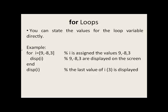We can directly state the values that the loop variable will be assigned in the following way. We can say i equals [9, -8, 3]. So i will be first assigned 9, then negative 8, then 3. So when i is equal to 9, we display 9 to the screen. Jump back up to the top, i is now negative 8, we display negative 8. Go back up to the top, i now has 3, we display 3 to the screen, and i has no more values it can be assigned, so the loop is over. If we then display the value of i, the last value, which was 3, will be displayed.